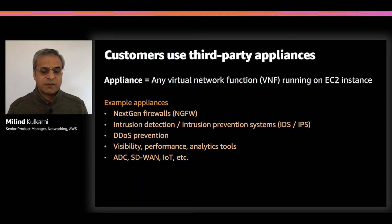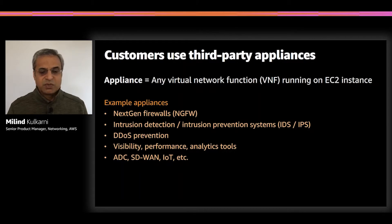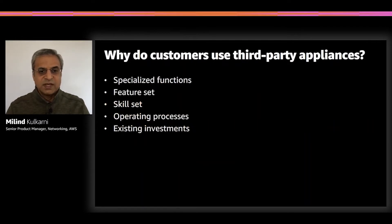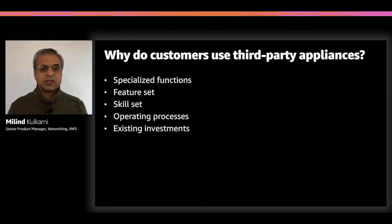Some of the examples of appliances are things like firewalls, intrusion detection and intrusion prevention systems — IDS/IPS — DDoS prevention systems, visibility tools, analytics, performance, monitoring, etc. There are a whole bunch of appliances that our customers use because they like the specialized functions, or they have used the features of those third-party appliances from different vendors or Amazon partners who make these appliances.